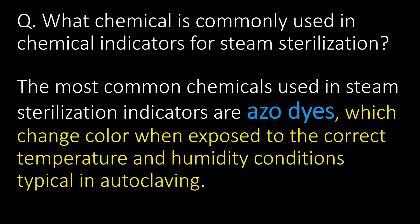What chemical is commonly used in chemical indicators for steam sterilization? The most common chemicals used in steam sterilization indicators are azoic dyes, which change color when exposed to the correct temperature and humidity conditions typical in autoclaving.